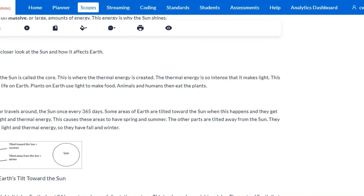Energy. The center of the sun is called the core. This is where the thermal energy is created. The thermal energy is so intense that it makes light. This light supports life on Earth. Plants on Earth use light to make food and animals and humans eat the plants.